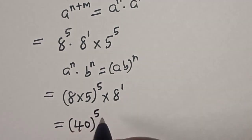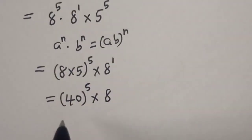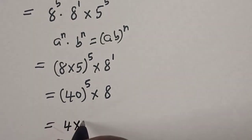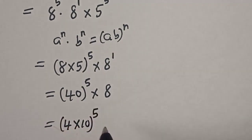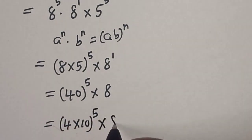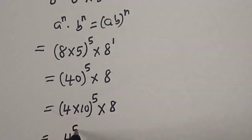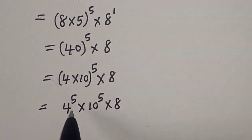8 times 5 is equal to 40, so this becomes 40 to the power of 5 multiplied by 8. And 40 is also 4 times 10, so we have 4 times 10 raised to power 5, multiplied by 8.